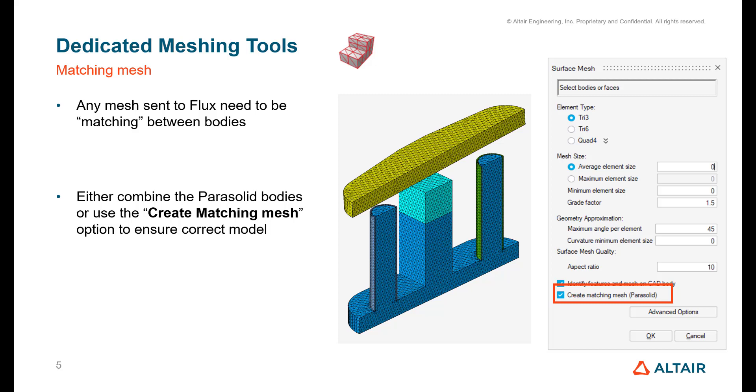You can also combine the parasolid if you've imported some parasolid files or converted to parasolid. They will be imprinted together that way the mesh will be connected nicely.